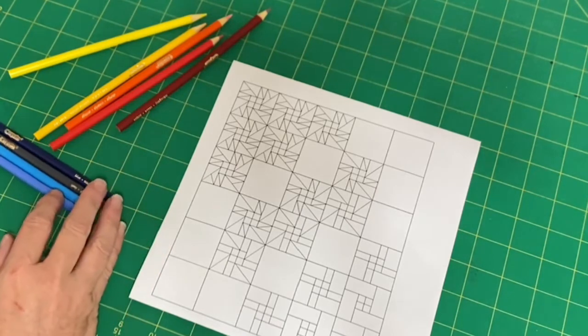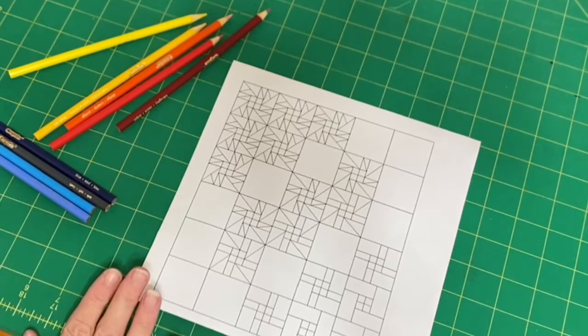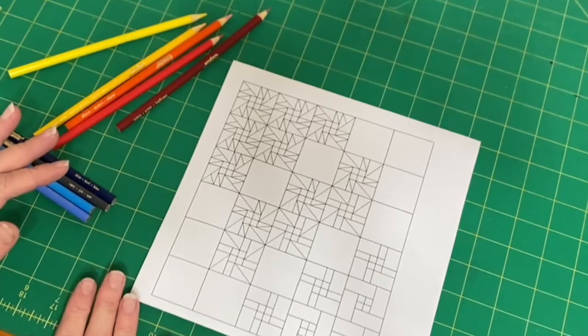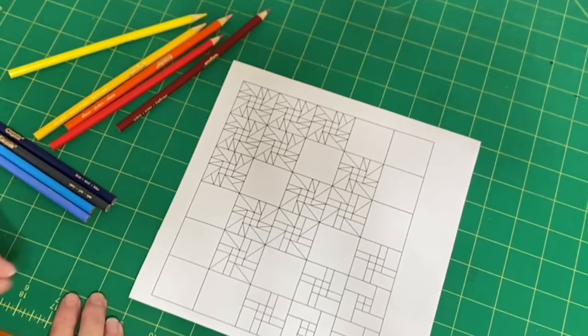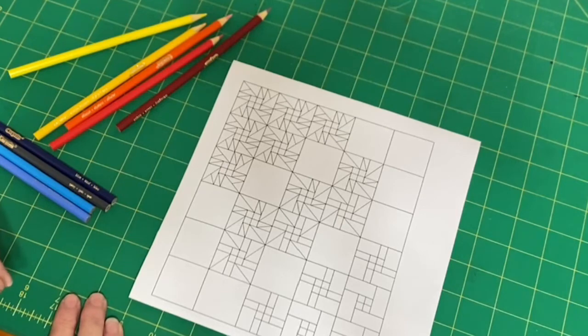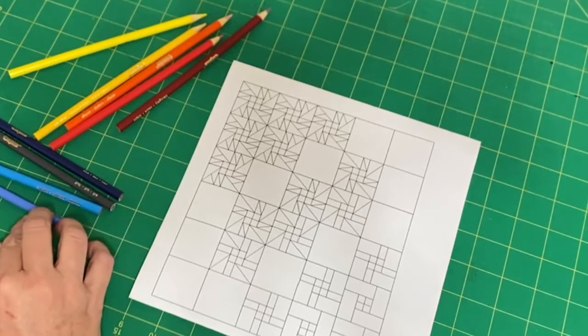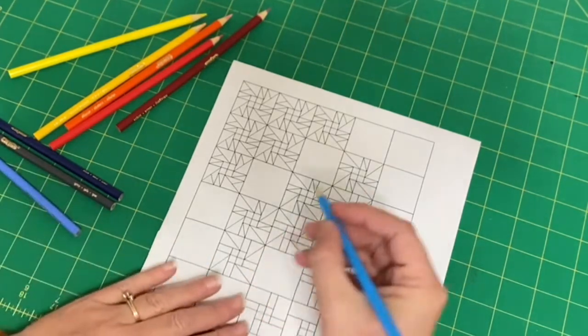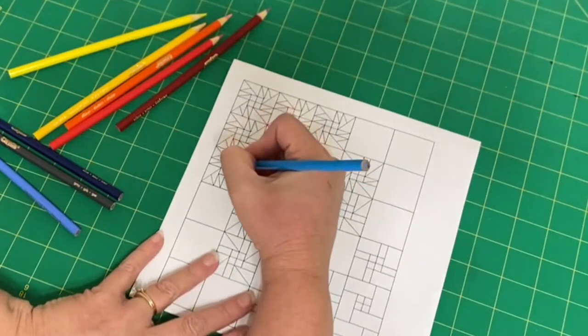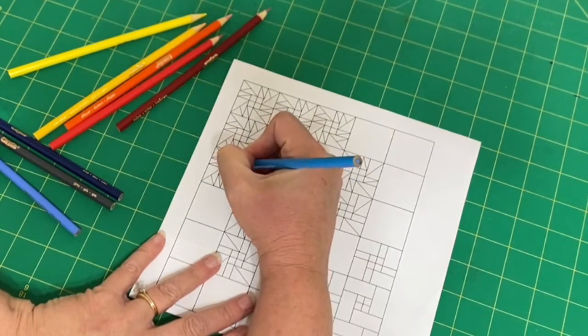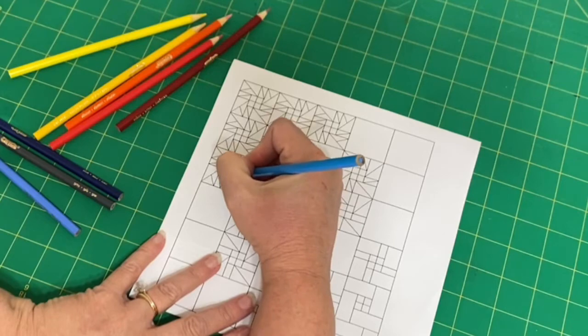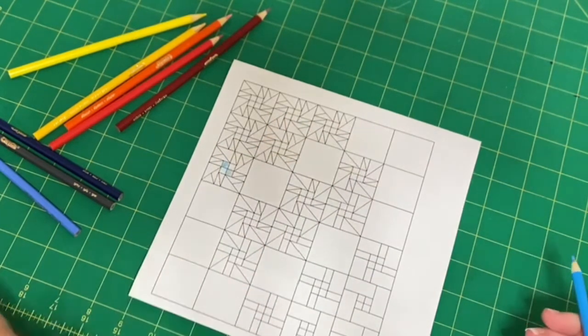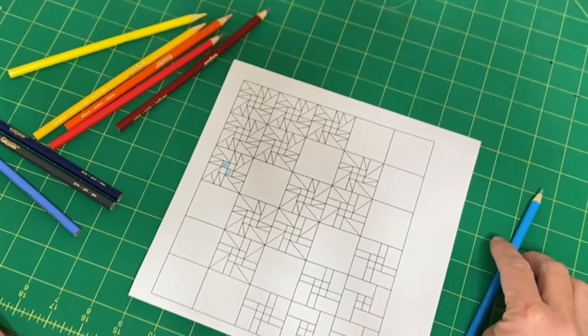So starting with the coloring page, you can see the different blocks that are included in this pattern, and they all have that four patch. So that's what I'm going to work on first. And sticking with the original idea, I'm going to use two shades of blue in my four patch. And I'm just going to color this main block with my colors because that carries through the rest of the pattern.